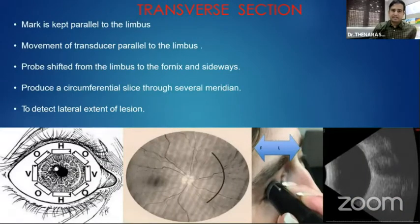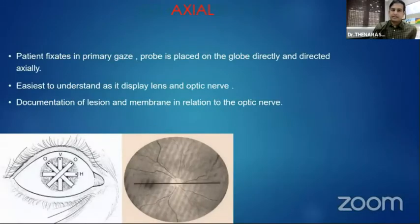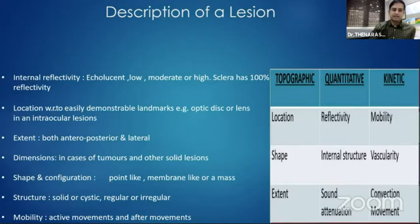In the probes, we can have three different sections. In the transverse section, the transducer is kept parallel to the limbus and helps in detecting the lateral extension of the lesion. In the longitudinal section, the transducer is kept perpendicular to the limbus with the probe towards the center of the cornea, helping detect the anterior-posterior limit of the lesion. In the axial section, it is measured in the primary gaze and helps in detecting lesions or membranes in relation to the optic nerve.